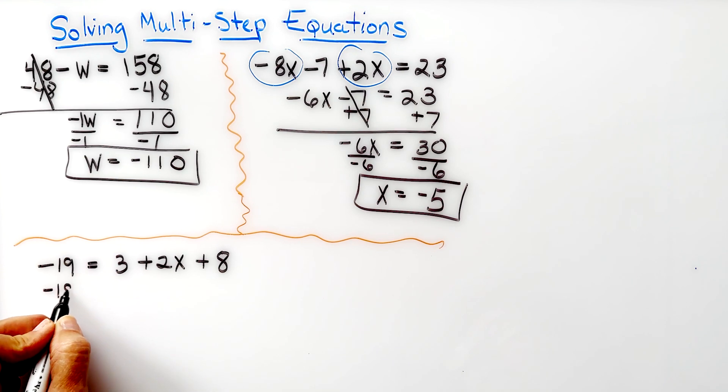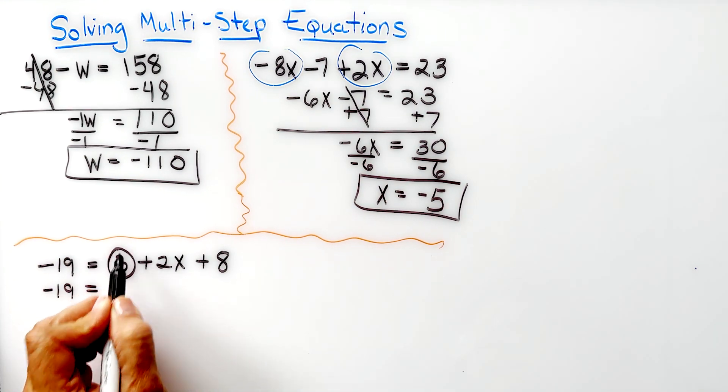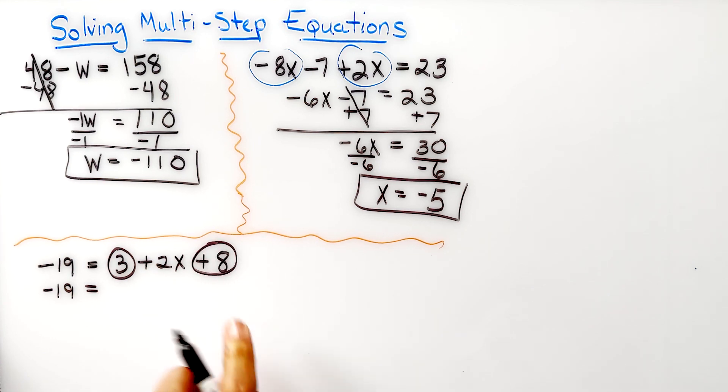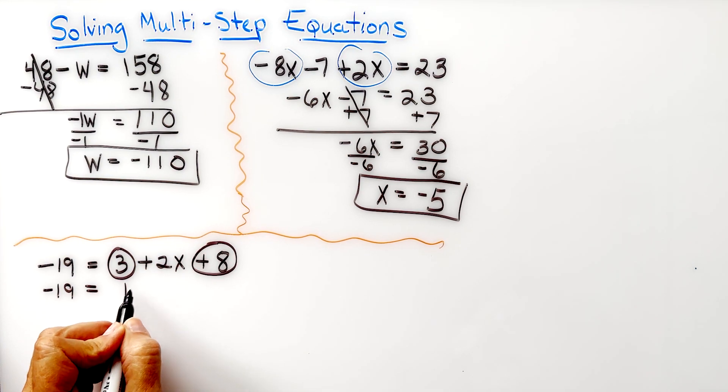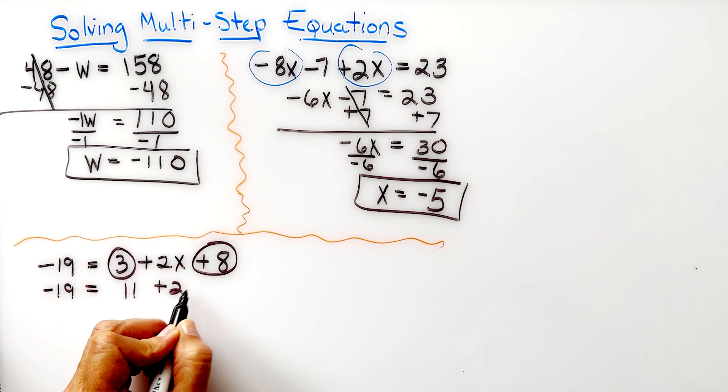I'm copying the negative 19 down. I'm going to add my 3 and my plus 8, which is 11 plus 2x.